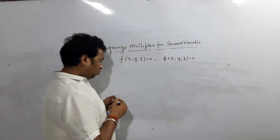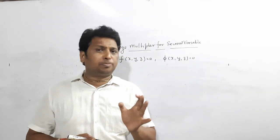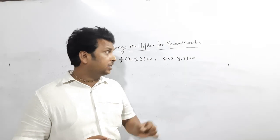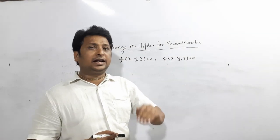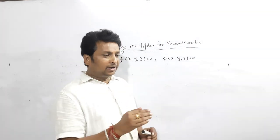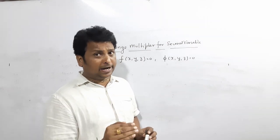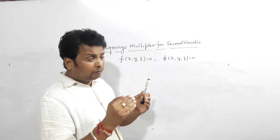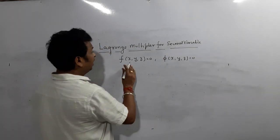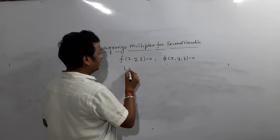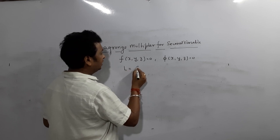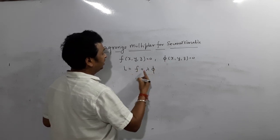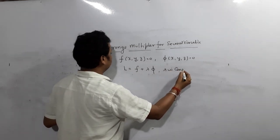So whenever they ask to solve by Lagrangian multiplier method, we have to find the function we are going to maximize or minimize, and the condition under which we do so. Whatever is given to maximize or minimize, that is your f; whatever remains, that is your phi — the condition. Once you have f and phi, you construct L, called the Lagrangian multiplier function, and that is f plus lambda times phi.